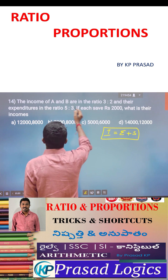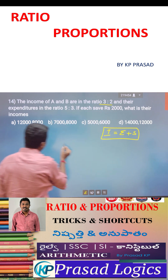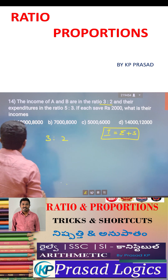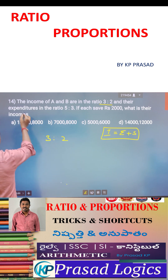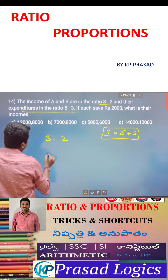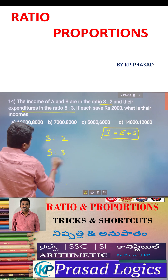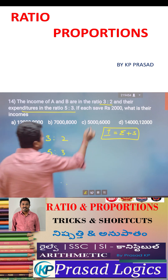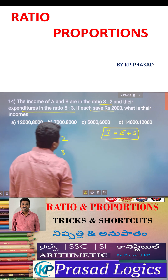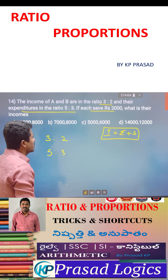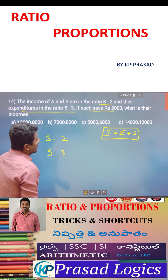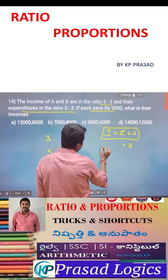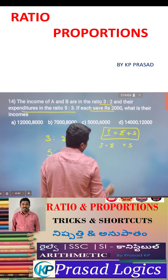Income ratio is 3 is to 2, and their expenditure ratio is 5 is to 3. Saving is equal to 2,000 rupees. Saving is equal to income minus expenditure.